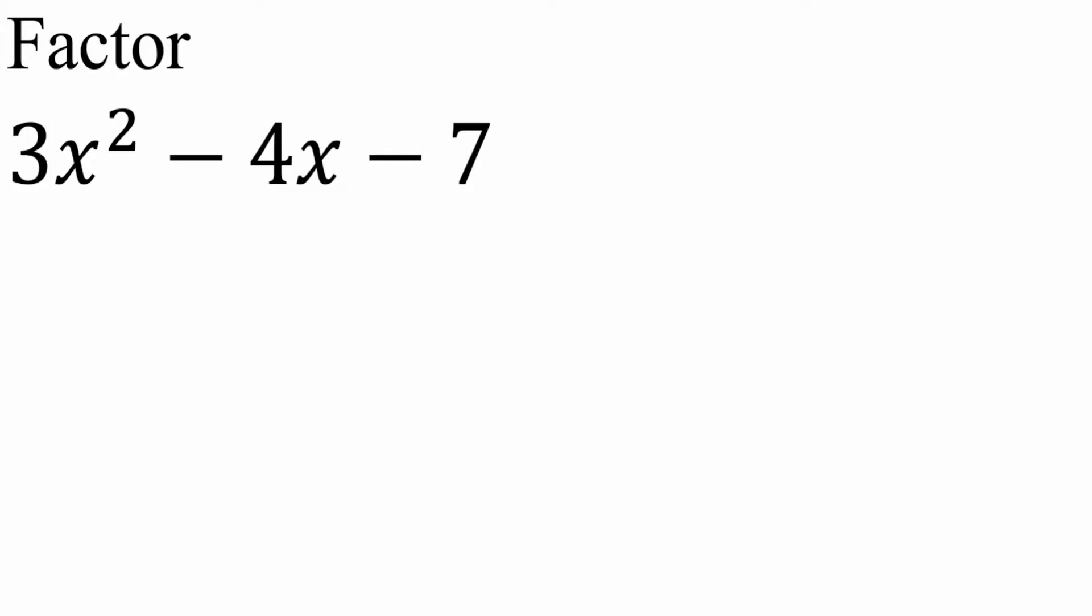Now in this problem I'm going to solve it mentally using trial and error approach. So first I see I have a 3x squared. There's only one way to get 3x squared, that's going to be by 3x, and then the other one would have to be an x, because 3x times x is 3x squared.